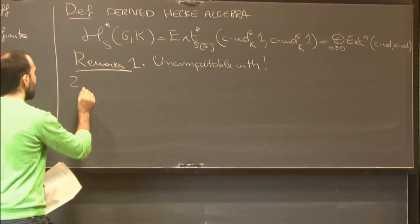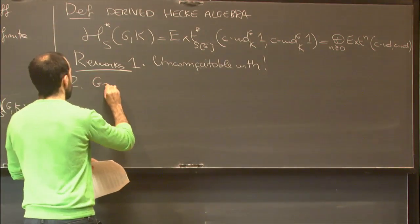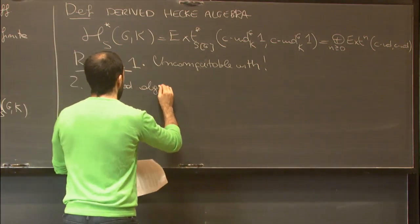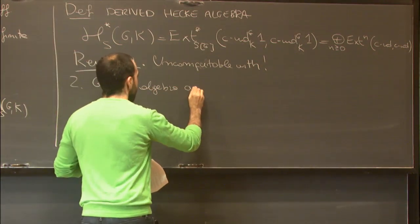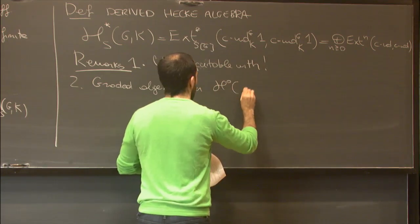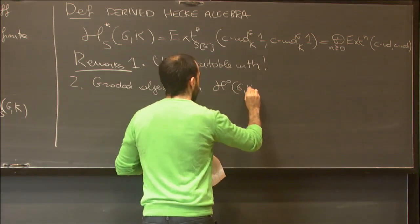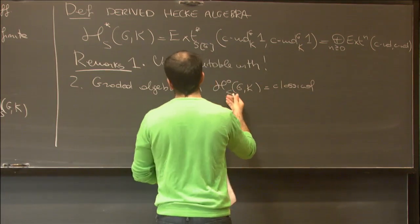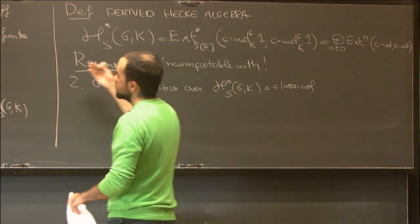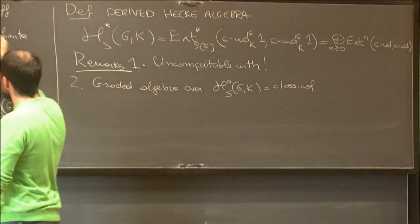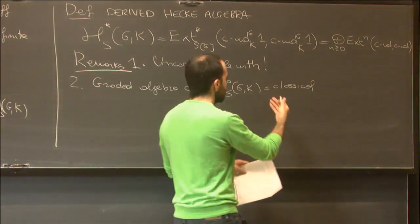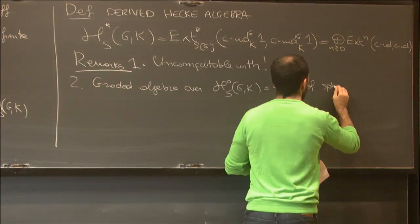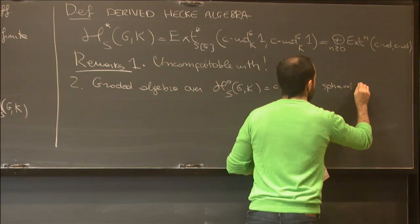The second remark is that this is a graded algebra over H₀, which is our classical one — it's classical, with S-coefficients. So somehow this P and this P will give us some interesting behavior, but it's still a classical spherical Hecke algebra.